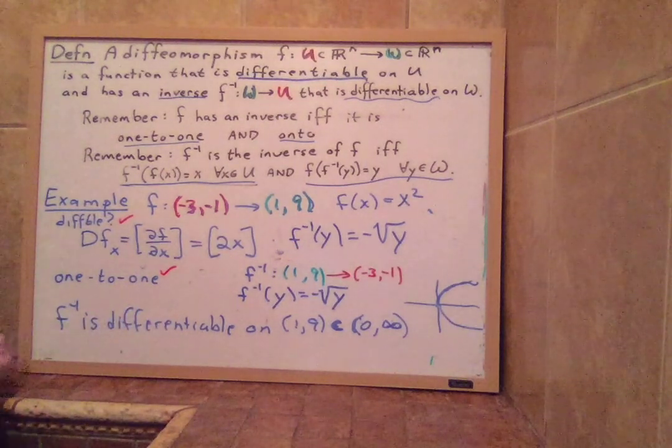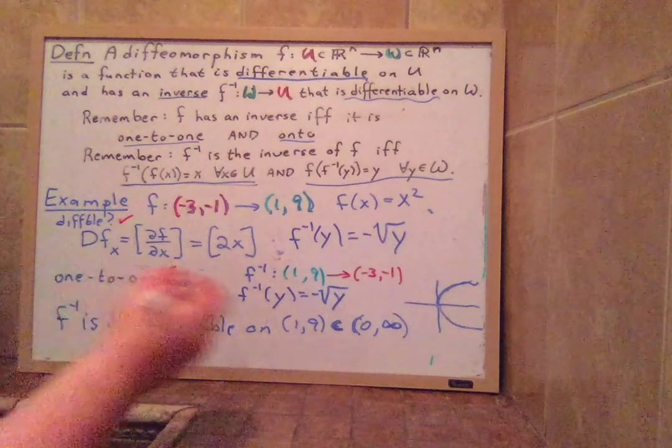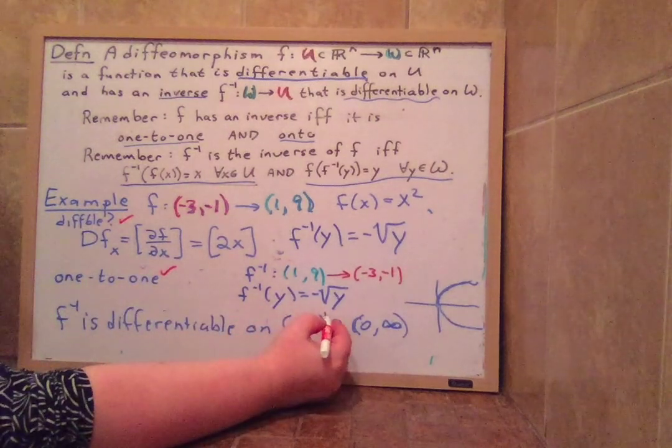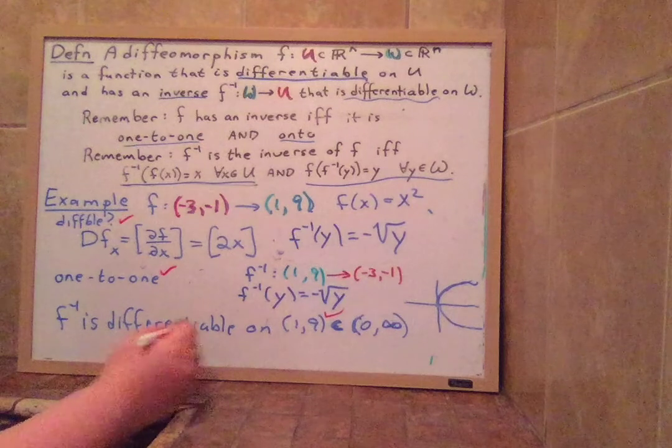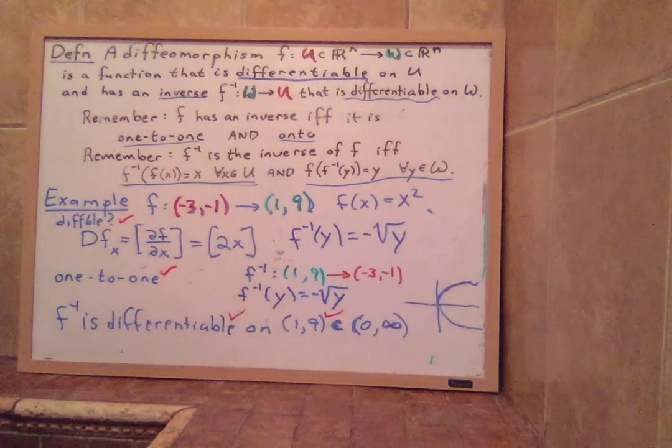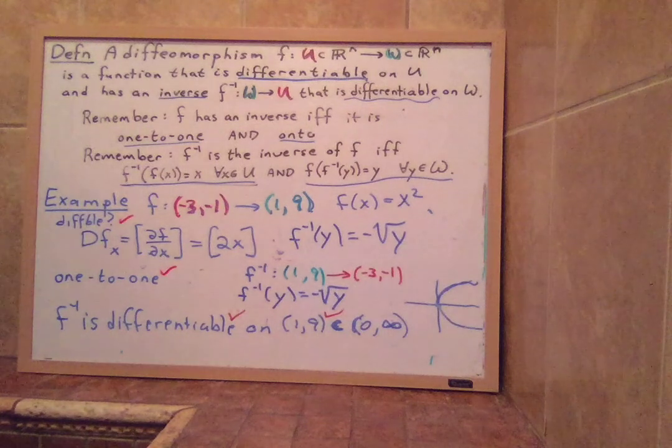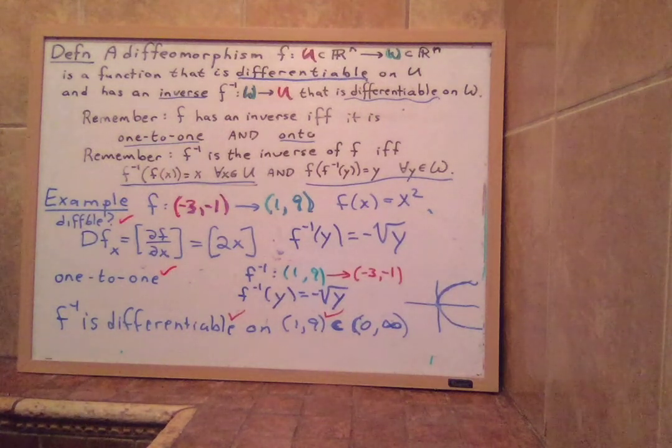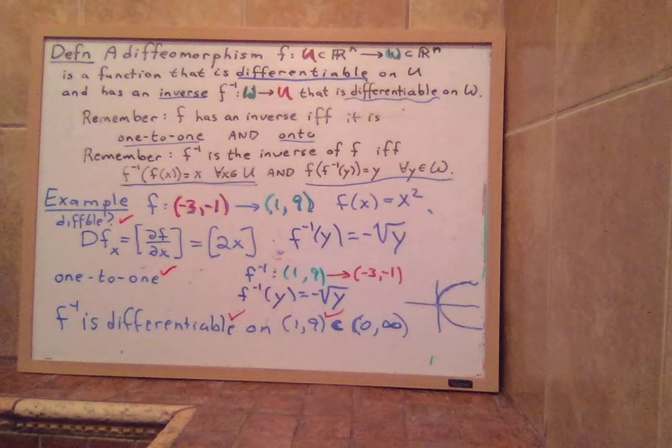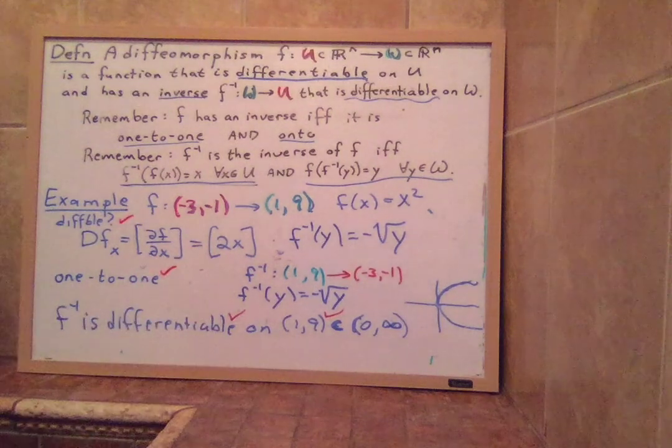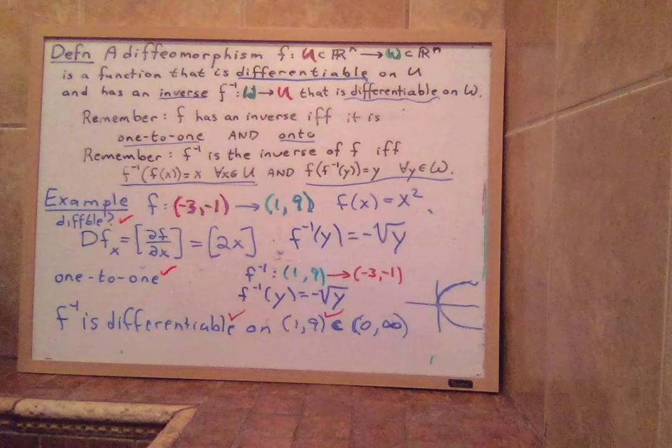And so we're done. We know that F from negative three, negative one to one to nine is a diffeomorphism. It is differentiable. So that was a very simple example. I did a more serious example before in the previous part, but I just wanted to go over a simple one now, which is something that you should all understand well. Alright. Thank you.